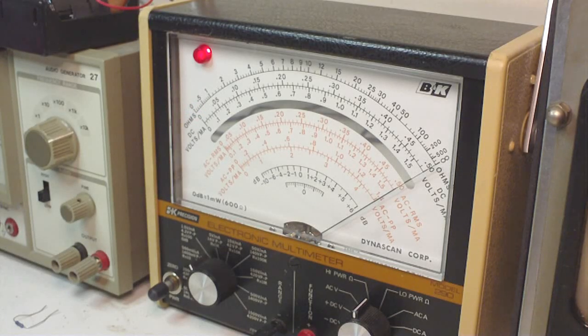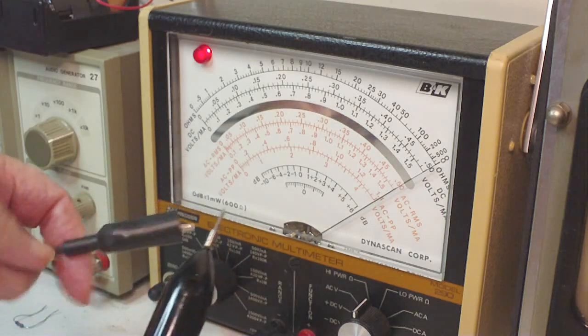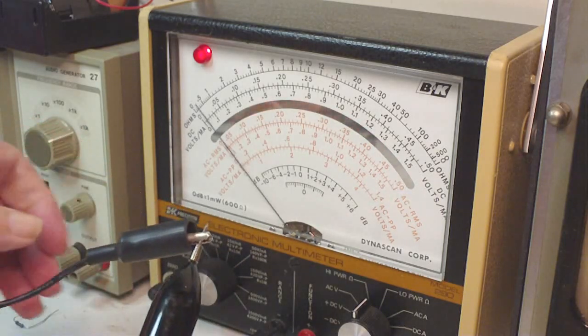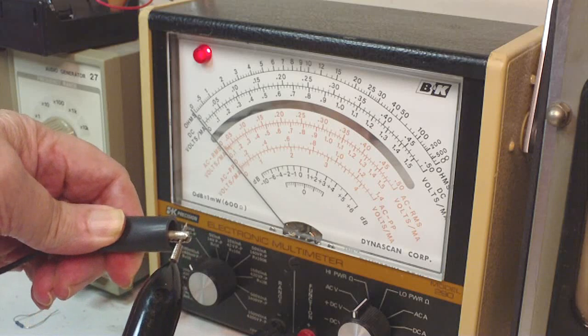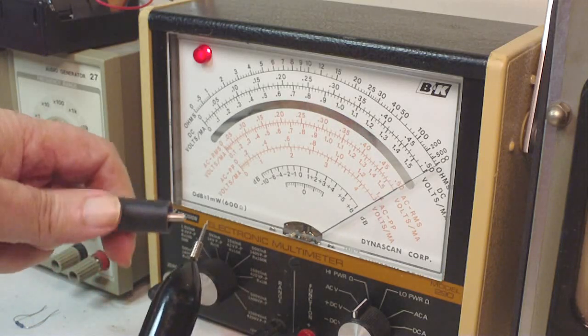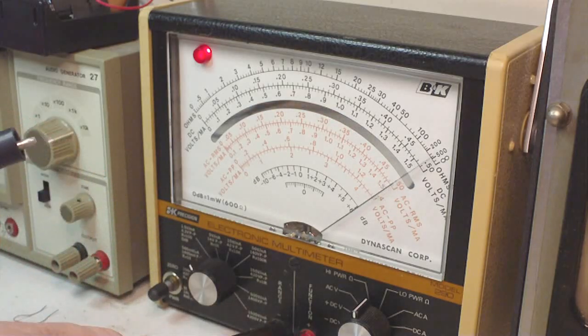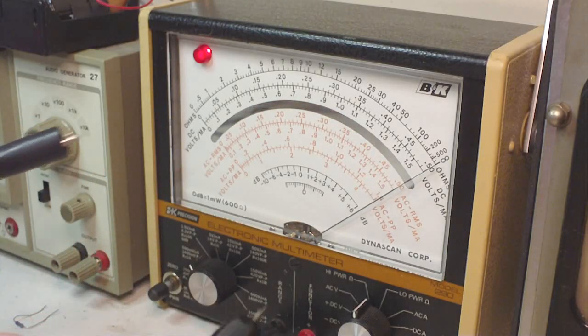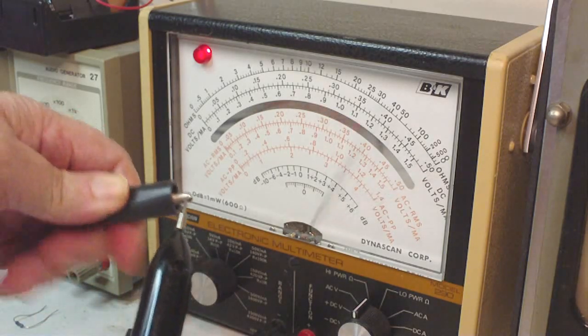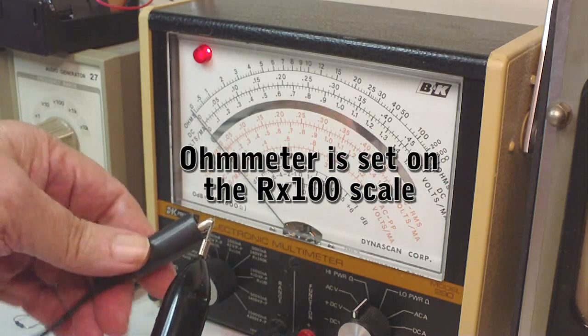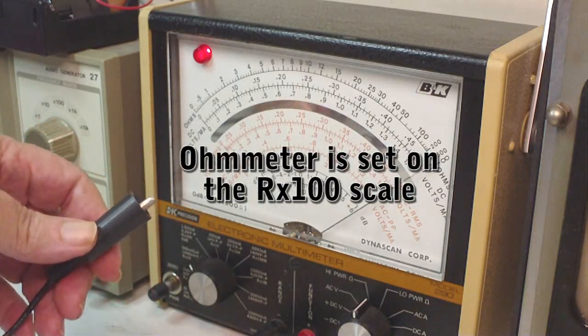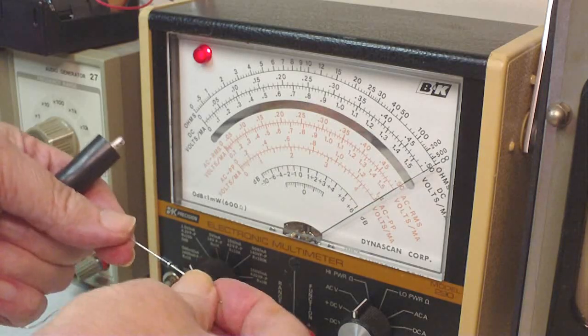The first thing we've got to do is determine which lead is positive and negative. This is in ohms position, and just because the probe says red here doesn't necessarily mean that this is positive and this is negative. We have to make sure.